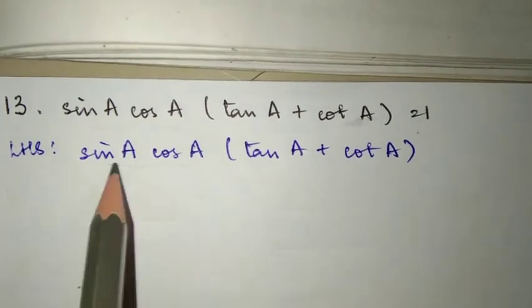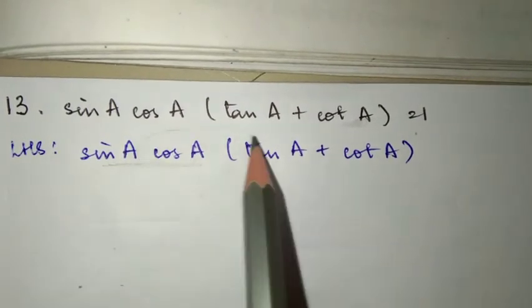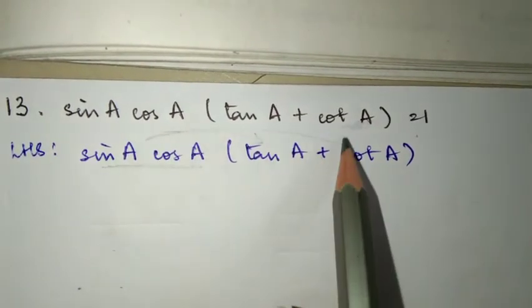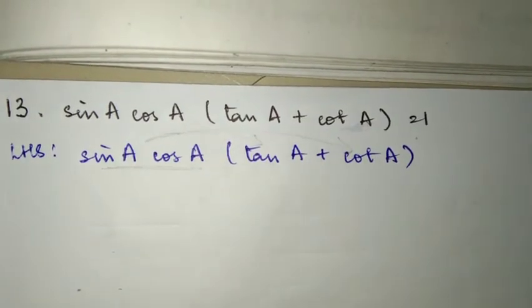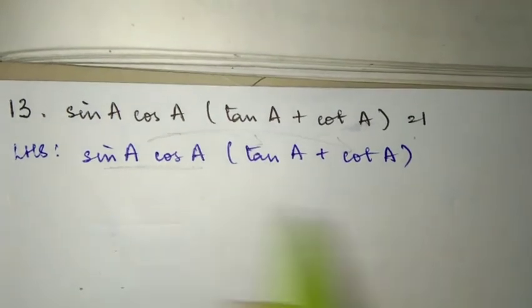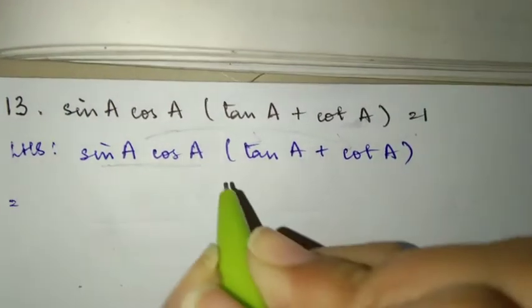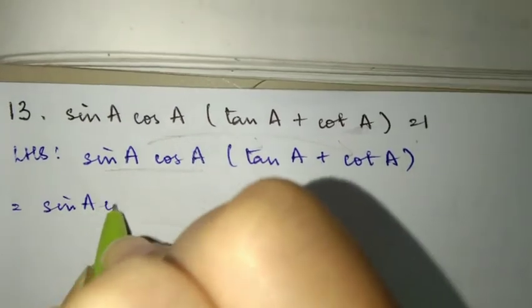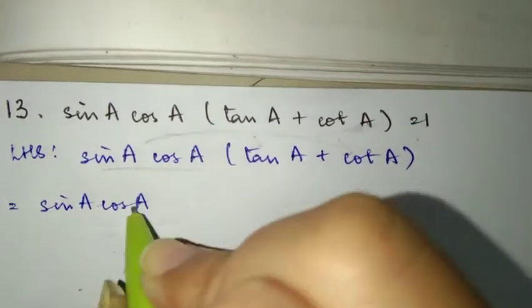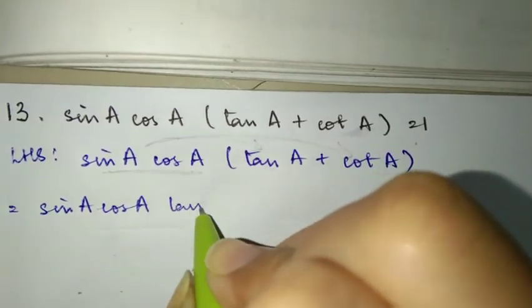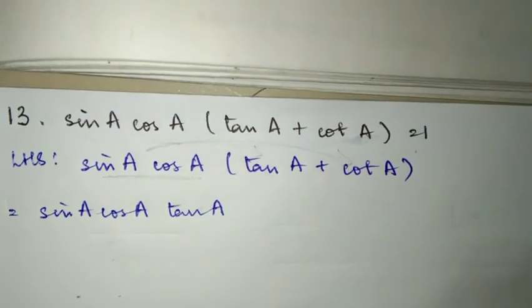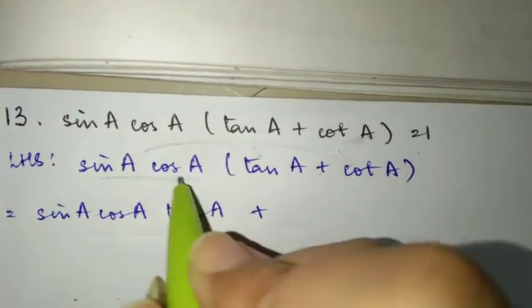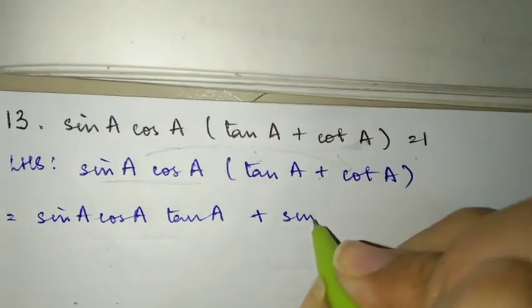So we open the bracket and multiply. Sin A cos A multiplies the first term and second term: sin A cos A into tan A, plus sin A cos A into cot A.